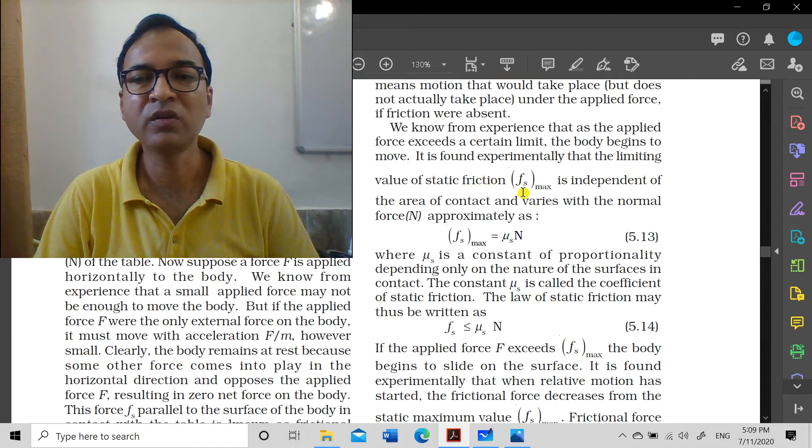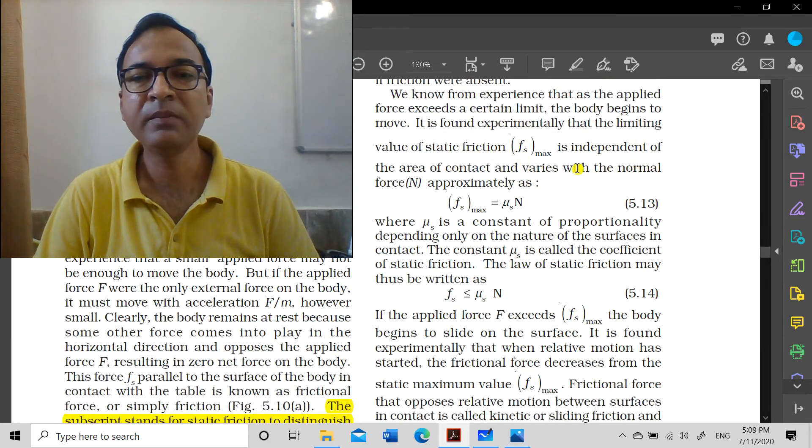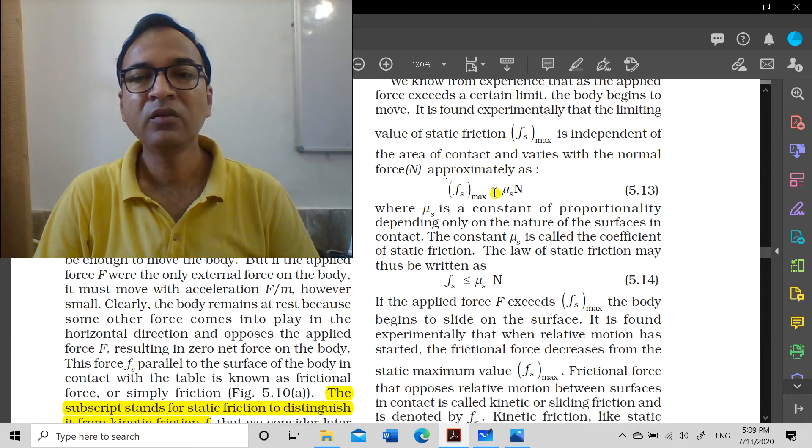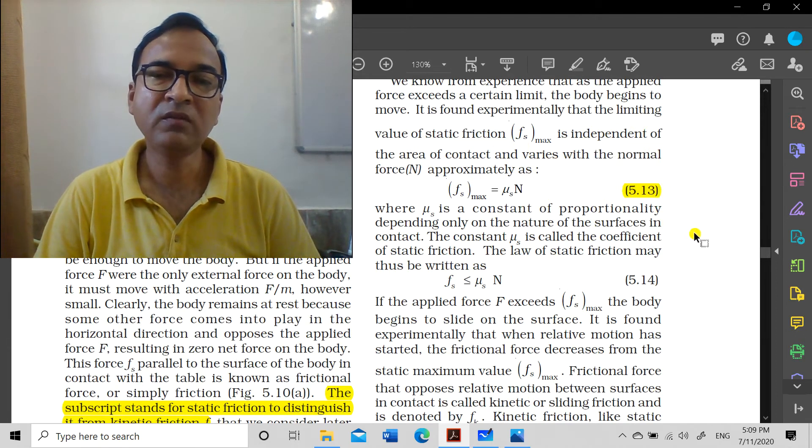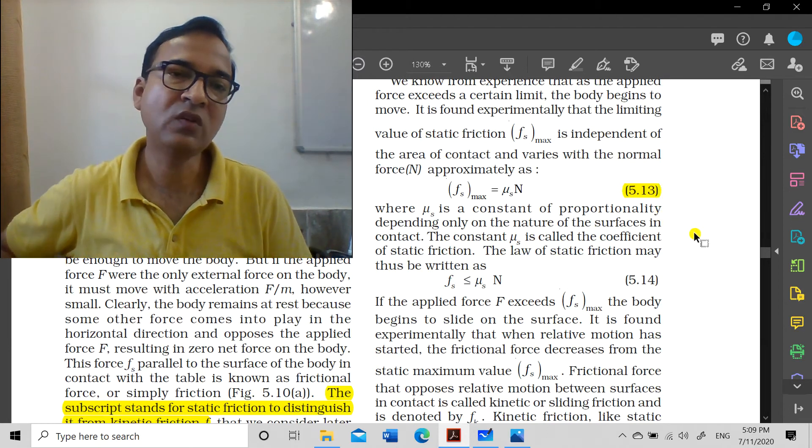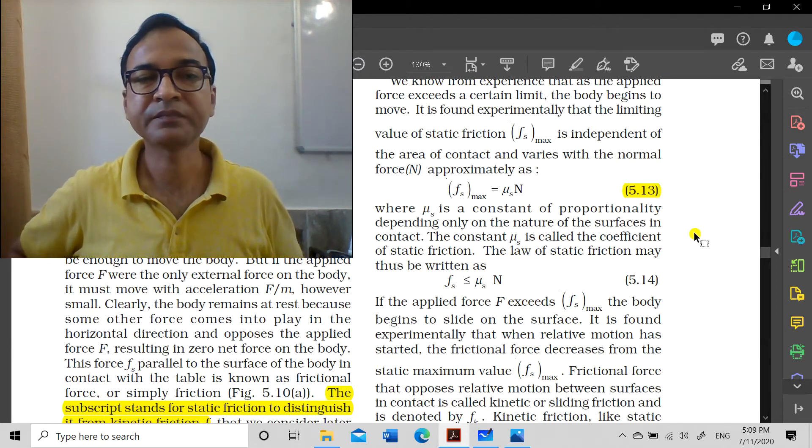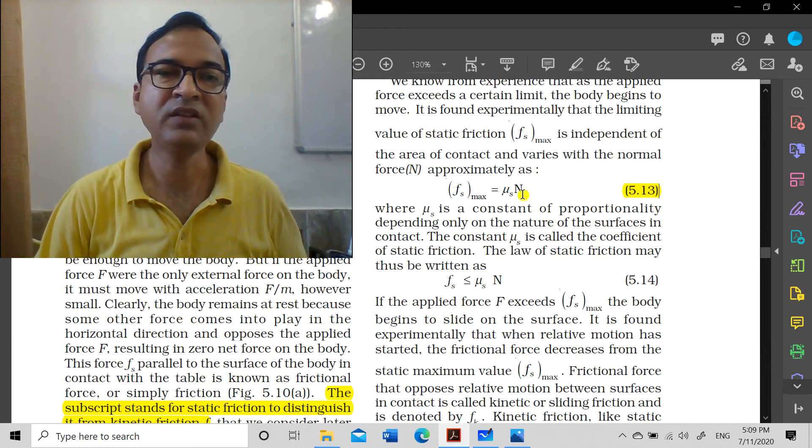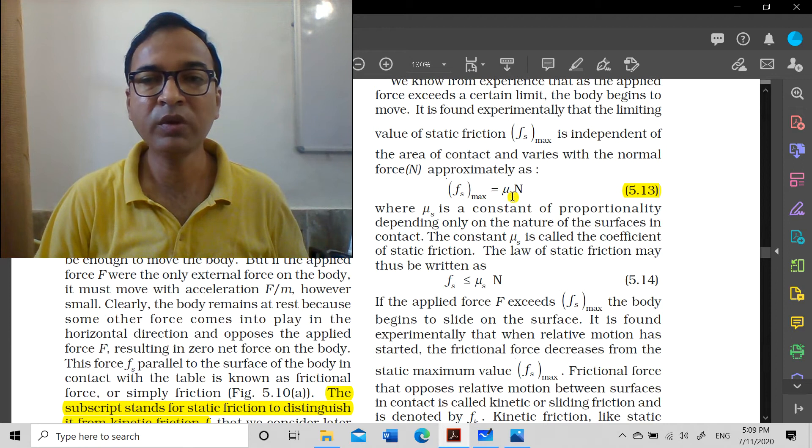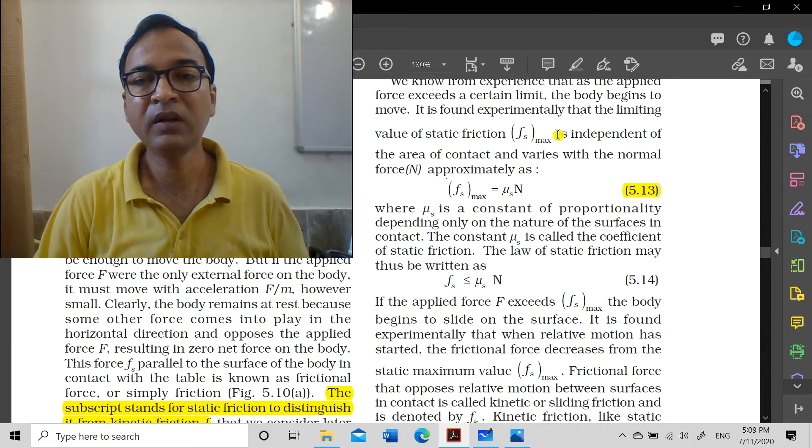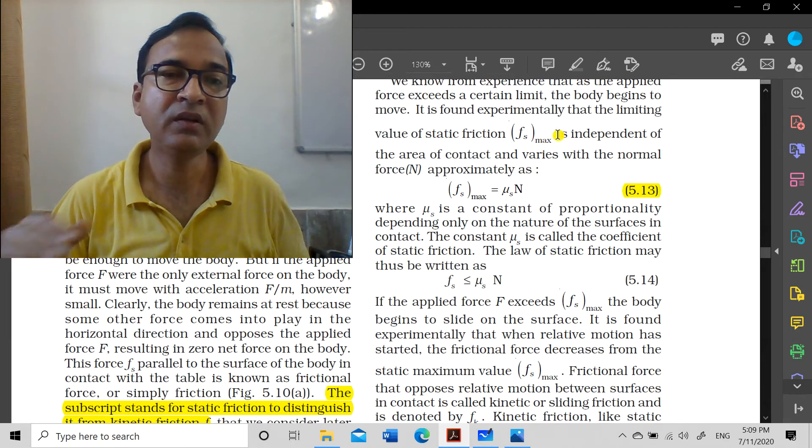We know from experience that as the applied force exceeds a certain limit, the body begins to move. It is found experimentally that the limiting value of static friction fs max is independent of the area of contact and varies with the normal force approximately as equation 5.13: fs max equals mu s times N. As long as normal reaction N doesn't change, the friction force won't change, because mu s is constant for the given surfaces.